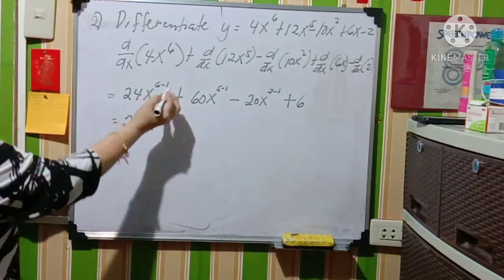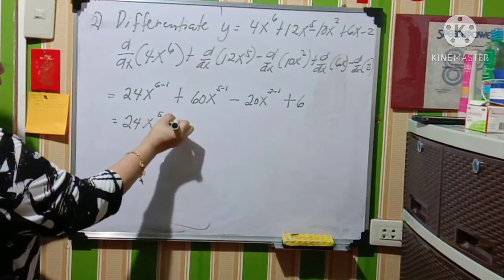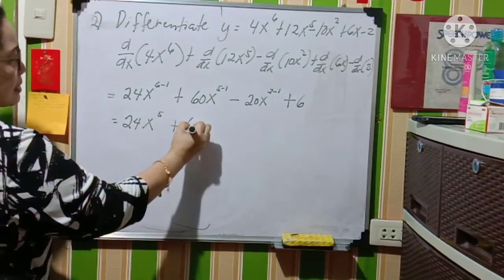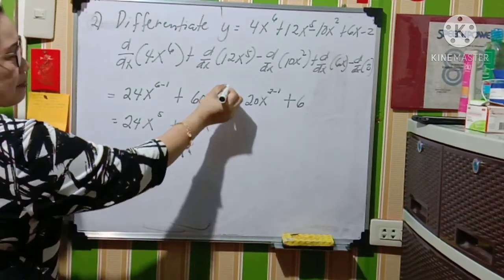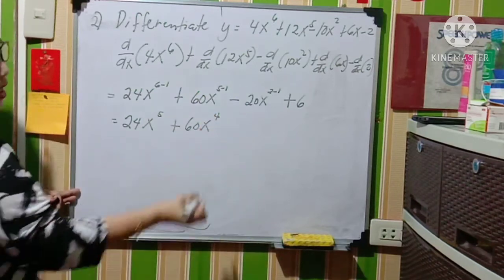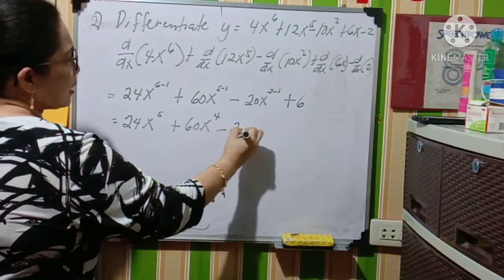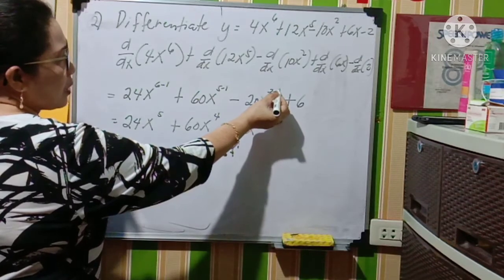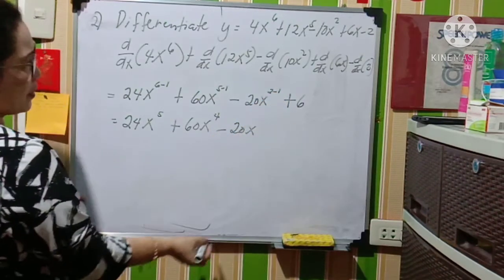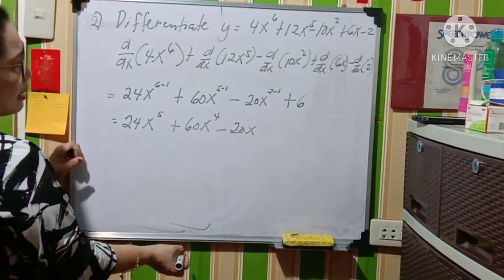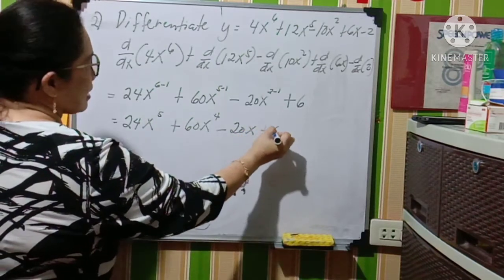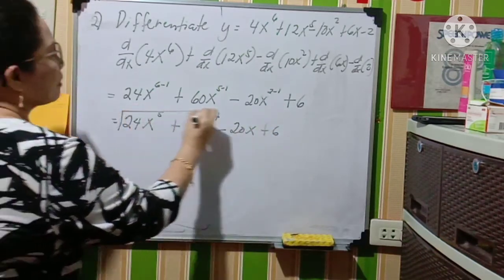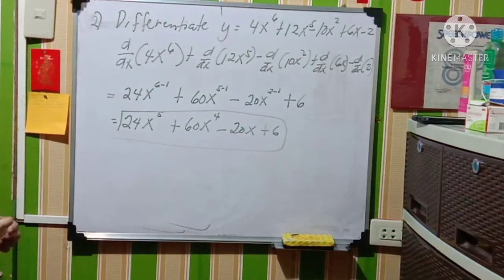So it will be 24x to the fifth power, since 6 minus 1 equals 5, plus 60x to the fourth power, since 5 minus 1 equals 4, minus 20x, since 2 minus 1 equals 1, and then plus 6. This is now the derivative of this function.